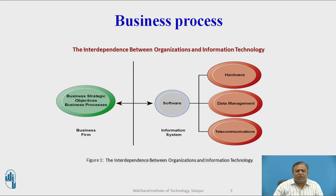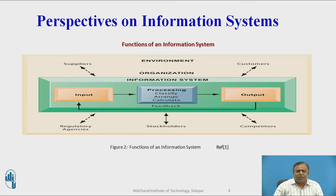Specifically, business firms invest heavily in information systems to achieve six strategic business objectives: operational excellence, new products, services and business models, customer and supplier intimacy, improved decision making, competitive advantage, and survival. The functions of an information system are: input function, processing function, and output function. The input function takes inputs; processing involves classifying, analyzing, arranging, or calculating parameters; and output produces the result.